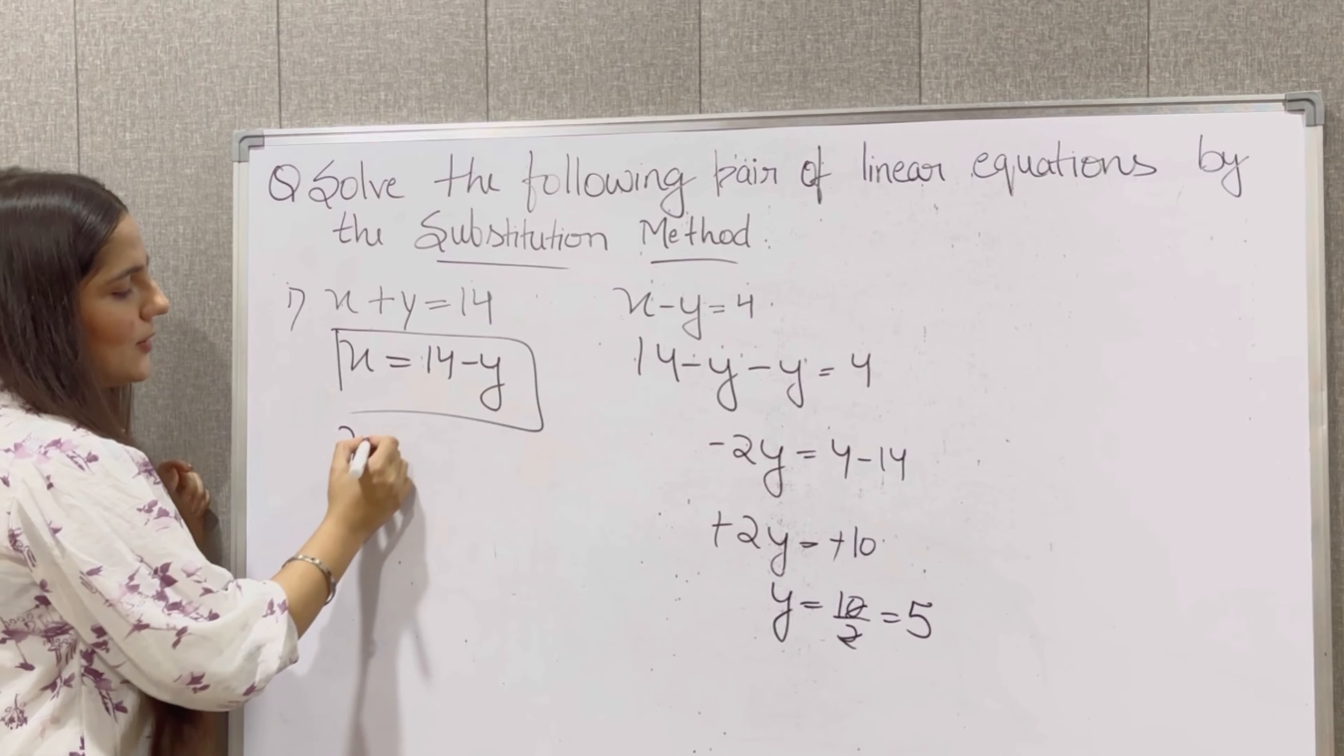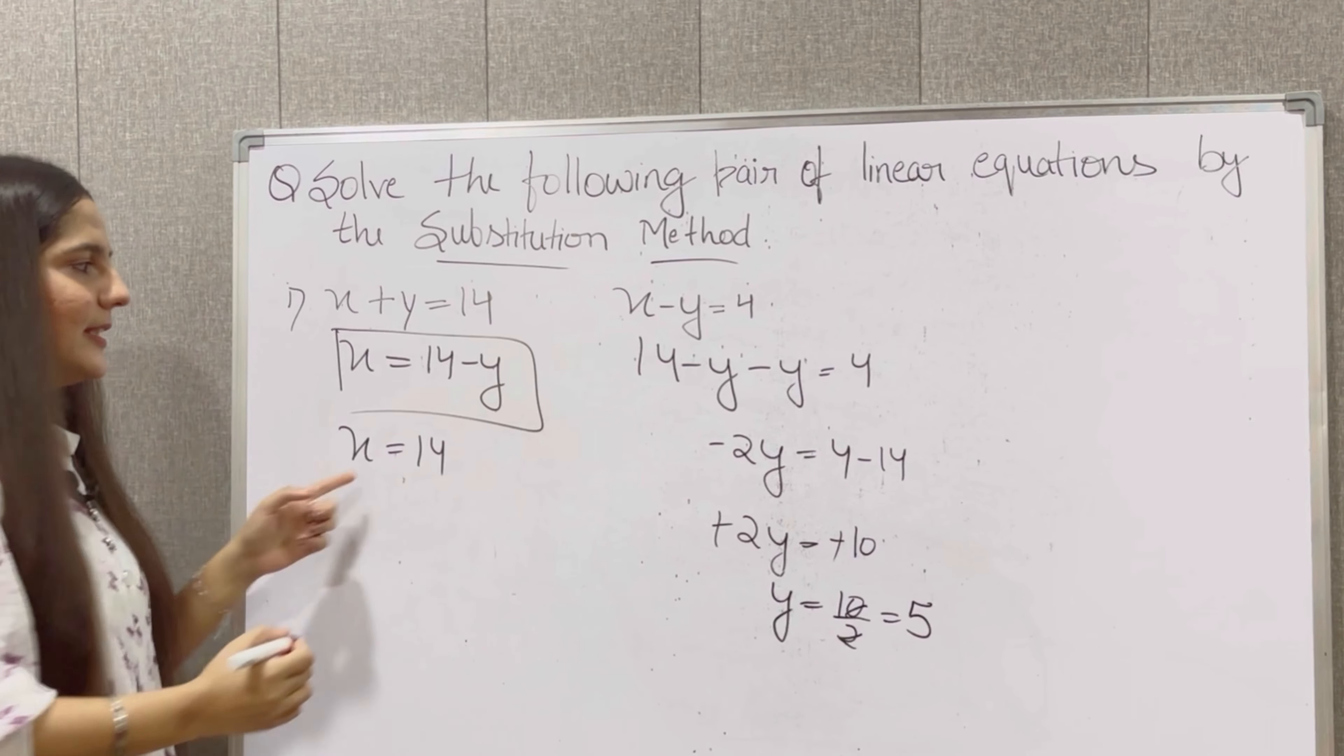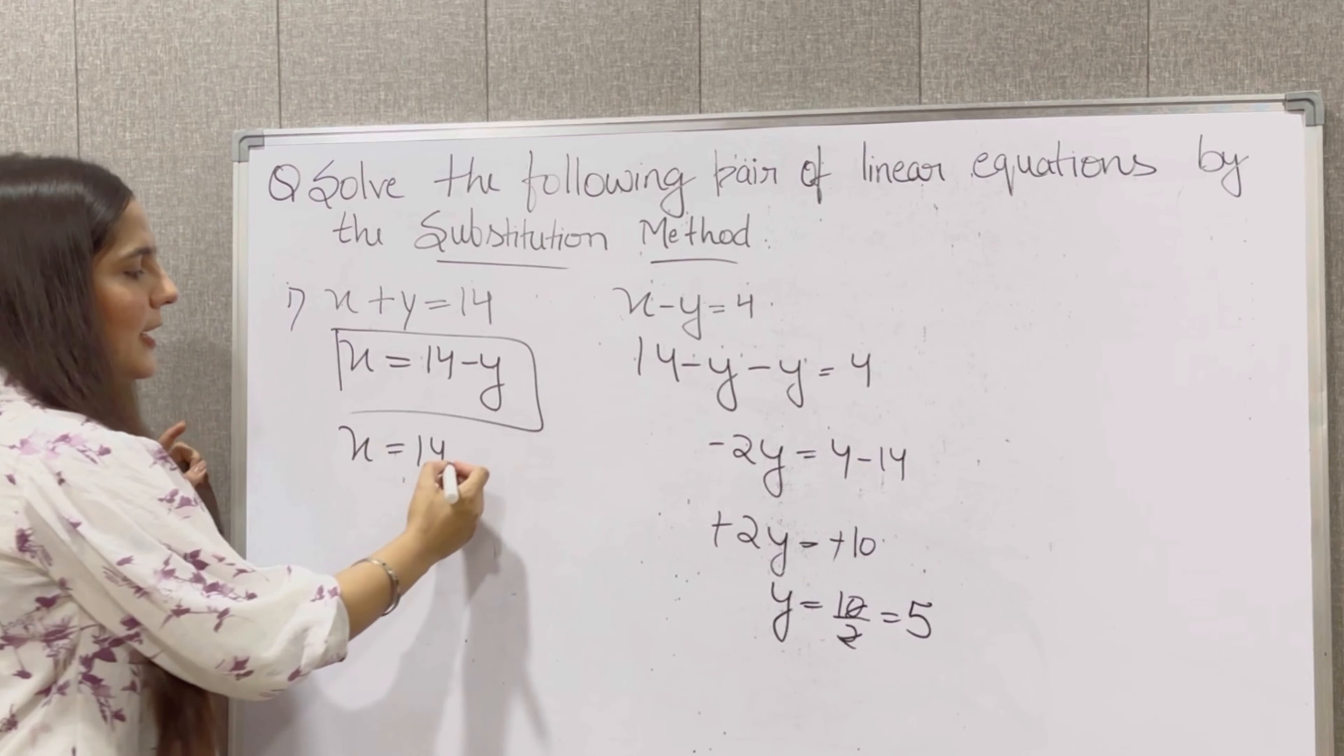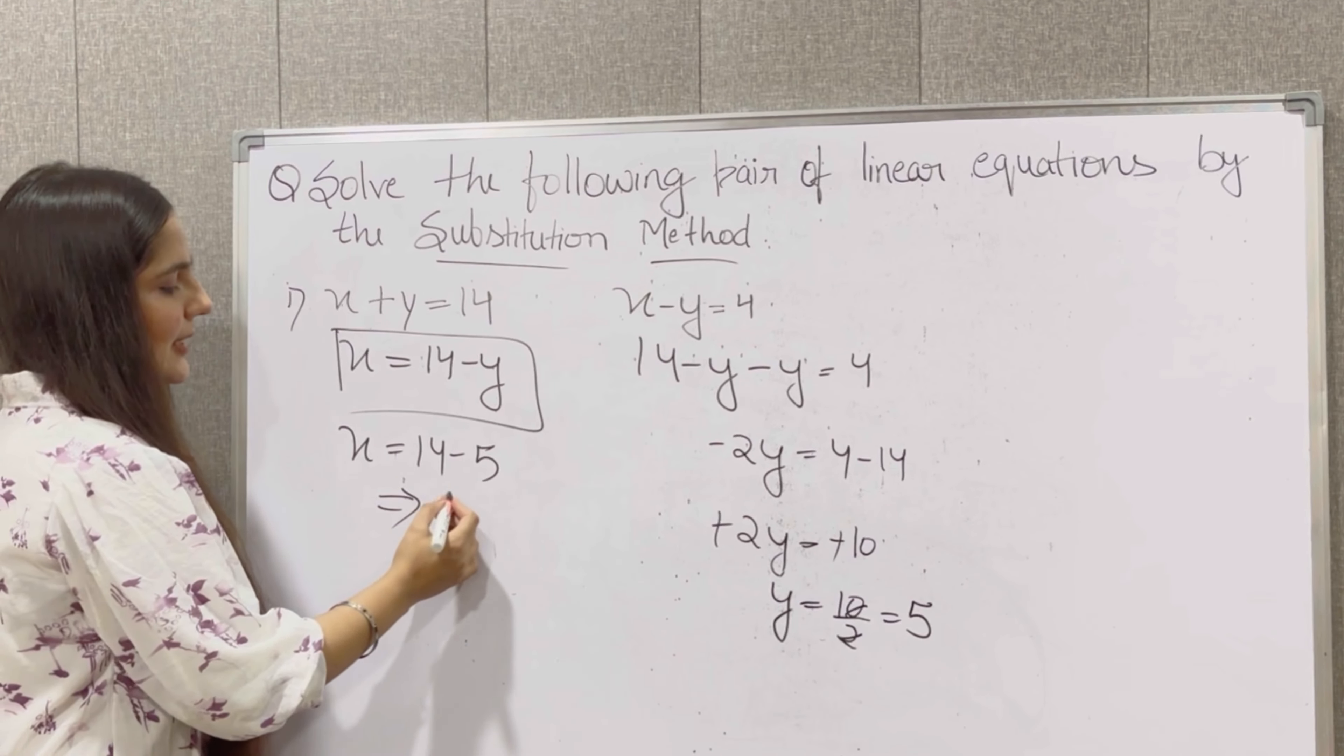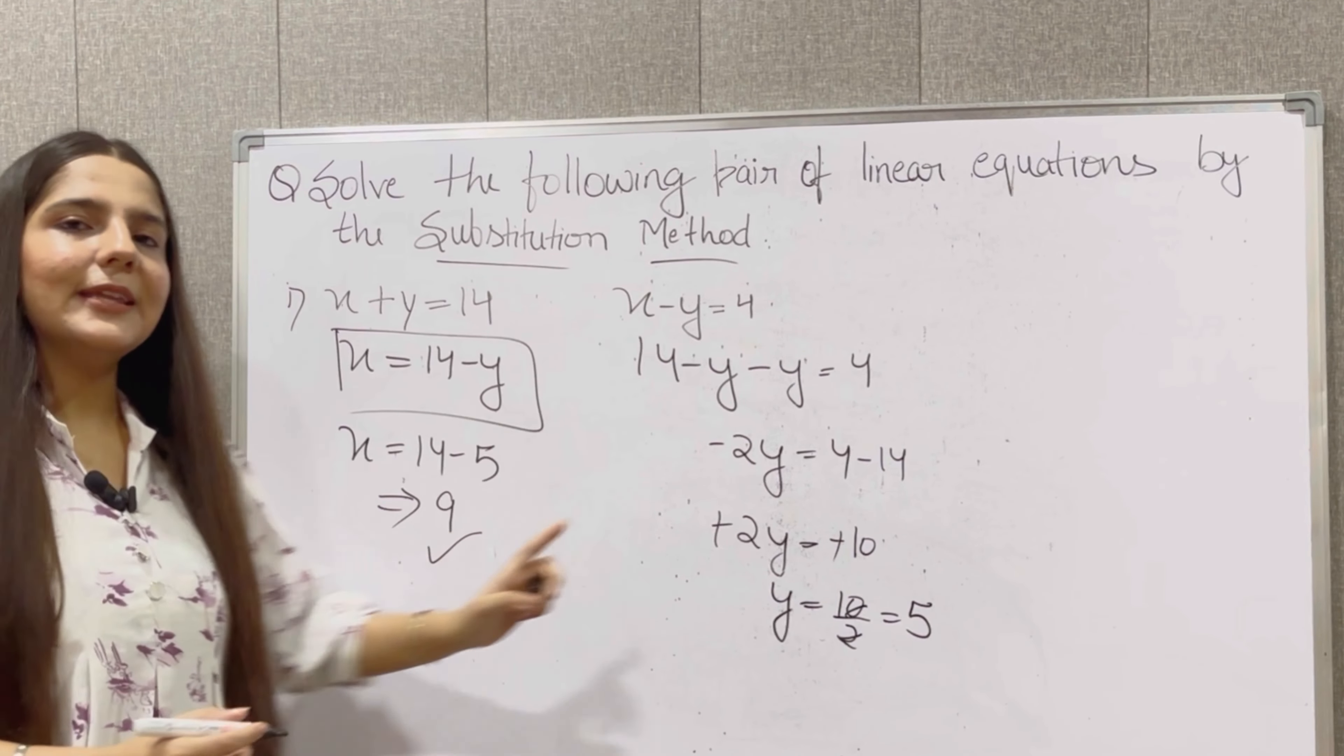Now we will find x's value. So x is equal to 14 minus y. So y's value is equal to 5. So 14 minus 5, you will get 9. So value of x is 9 and y is 5.